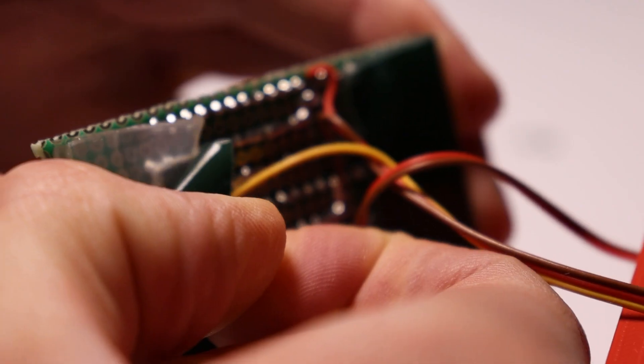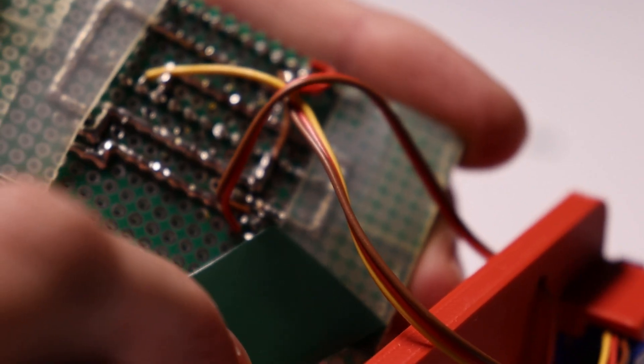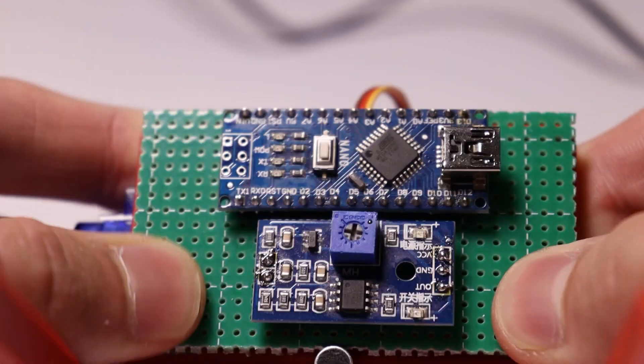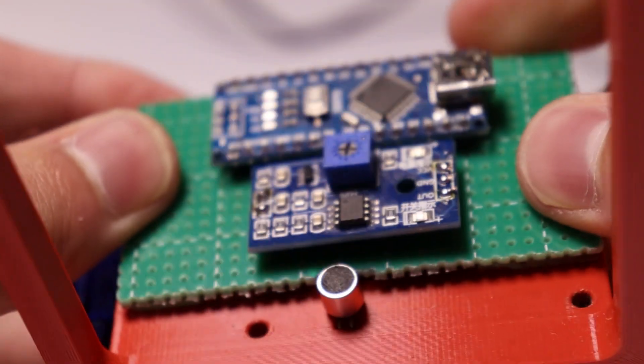After that, I have screwed the servo in place. Then, I took very strong double sided sticky tape and pressed them together for few seconds to bond them correctly to get something looking like this.